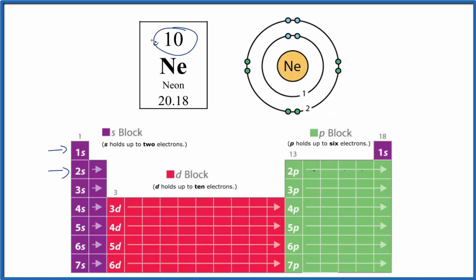We have two here. We need 10 total. So we're going to put eight electrons in the second energy level. Two, four, six, eight, right there in the second energy level. This energy level is full.